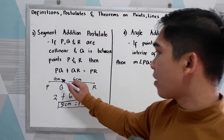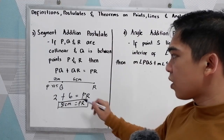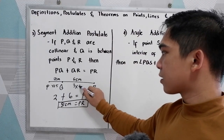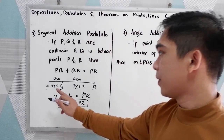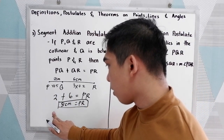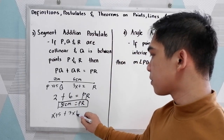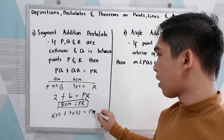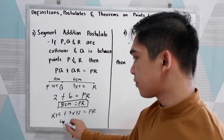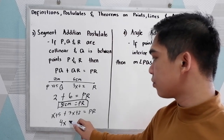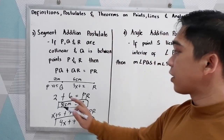Next, if we have PQ as X plus 5 and QR is 3X plus 2, find PR. So PR equals (X + 5) + (3X + 2). Combine like terms: X plus 3X is 4X, and 5 plus 2 is 7. So PR equals 4X plus 7.